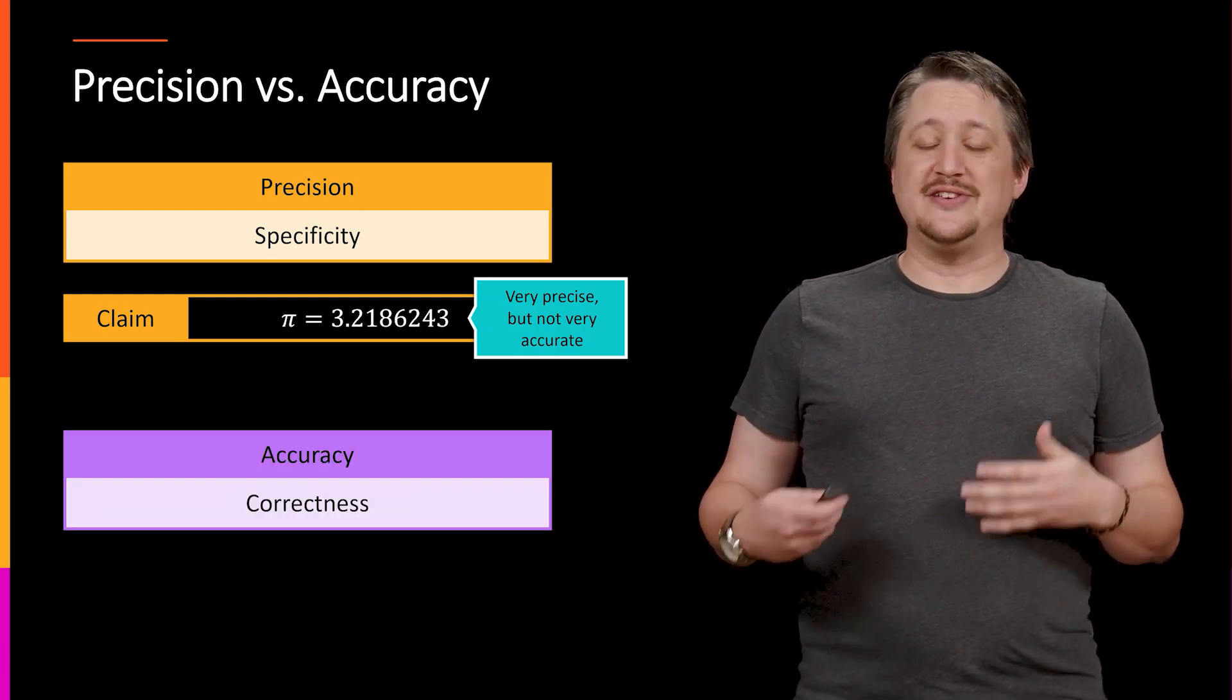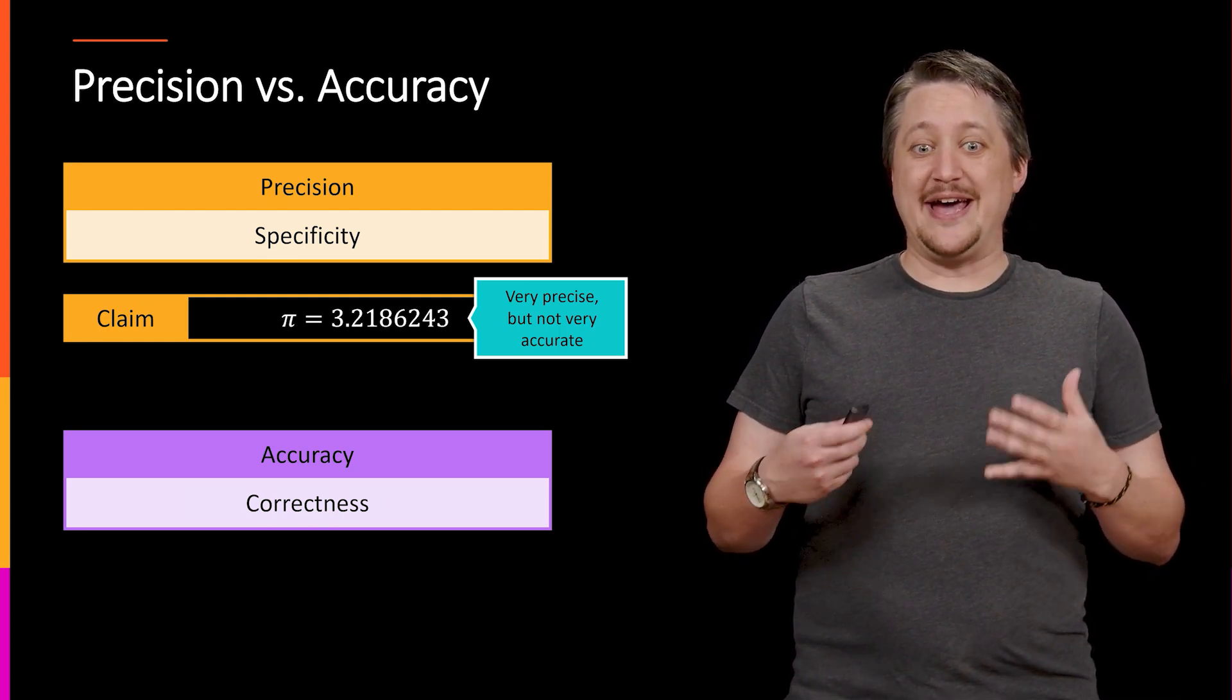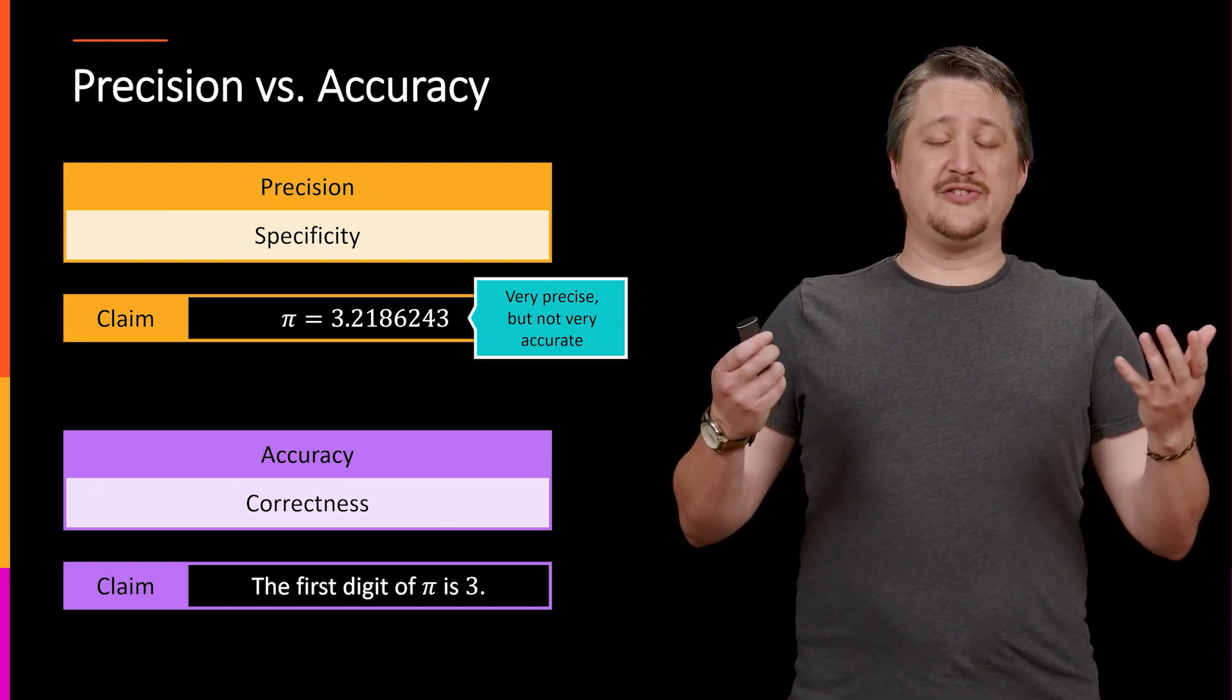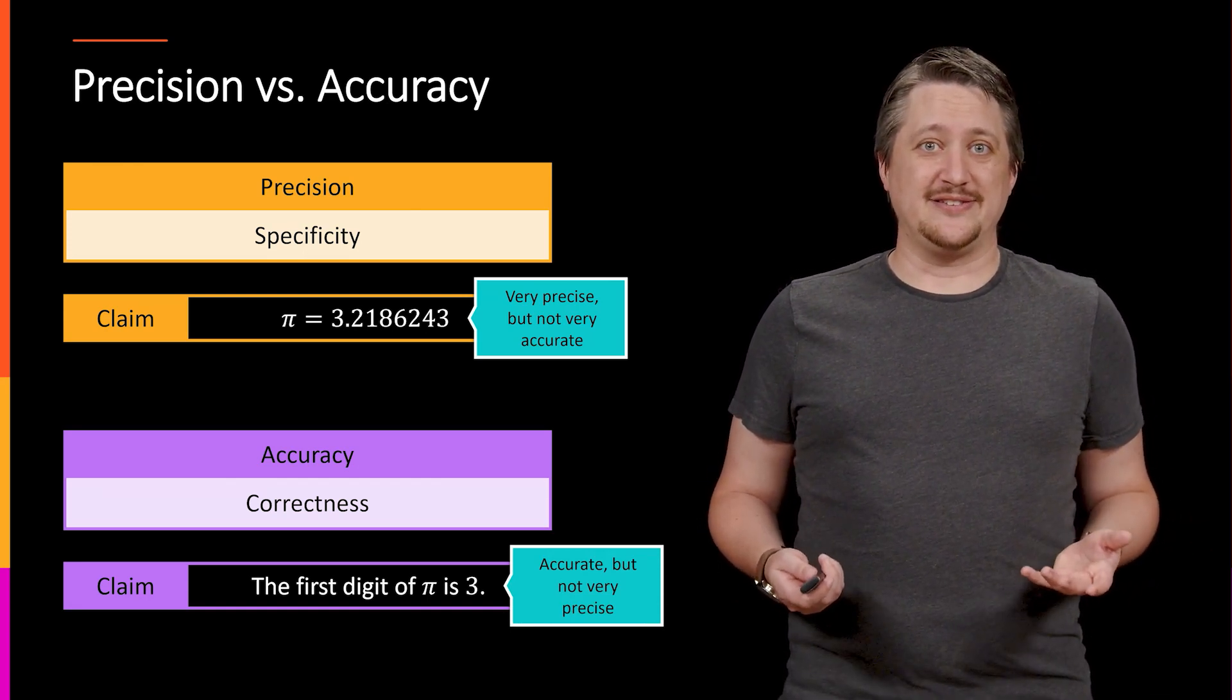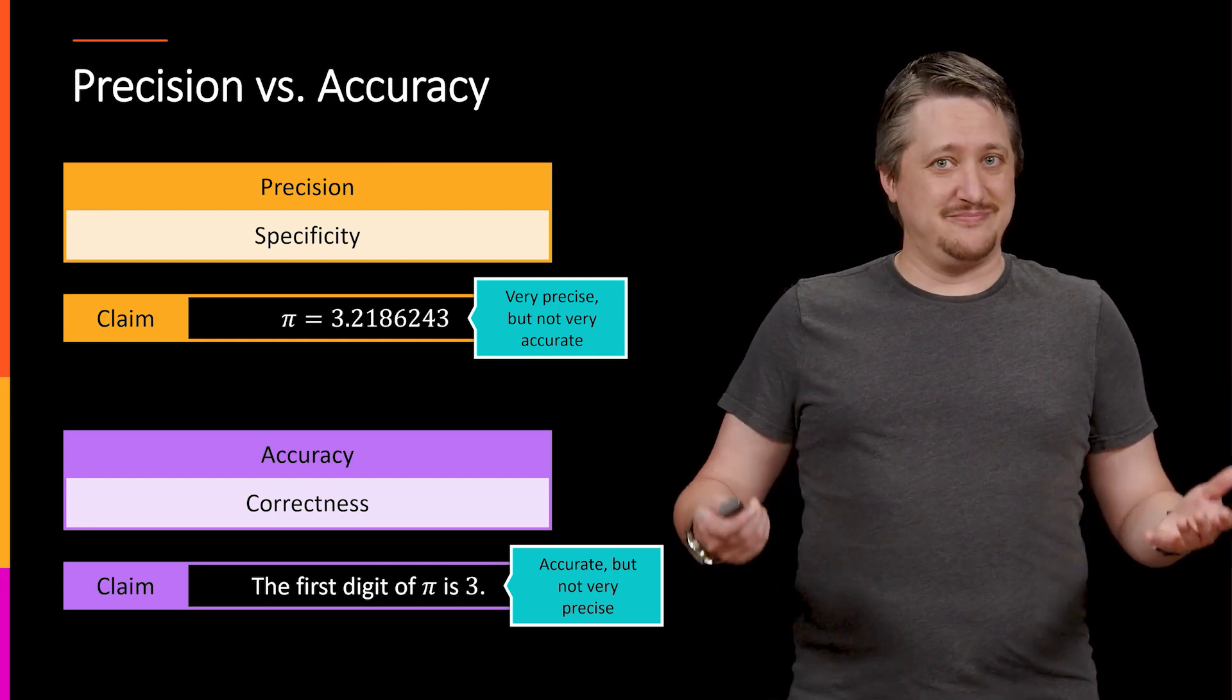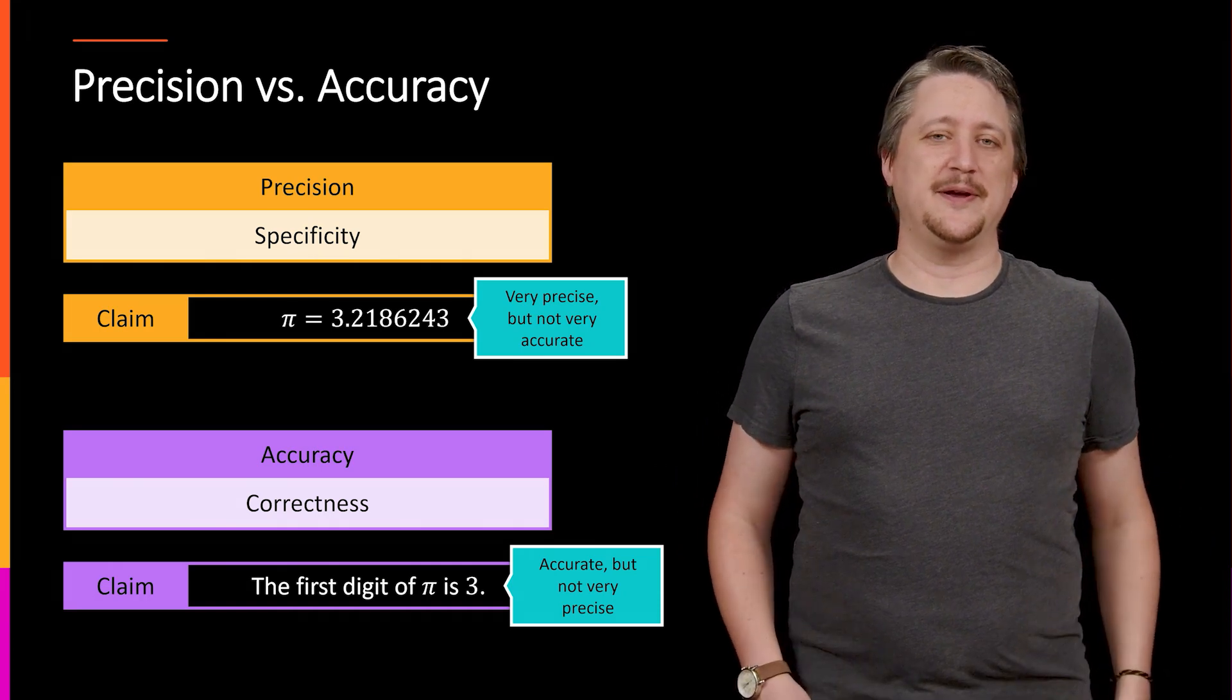Whereas accuracy, that's more about the correctness. And again, this also goes both ways. You can be accurate without being precise. So we could say something like the first digit of pi is 3. And that is true, so that is accurate. It's just not all that precise. There's a bunch more decimals that follow it. So that's not very helpful if you need those other digits.